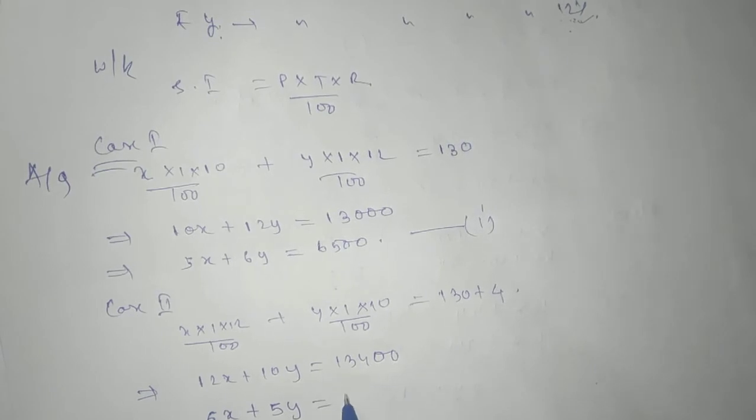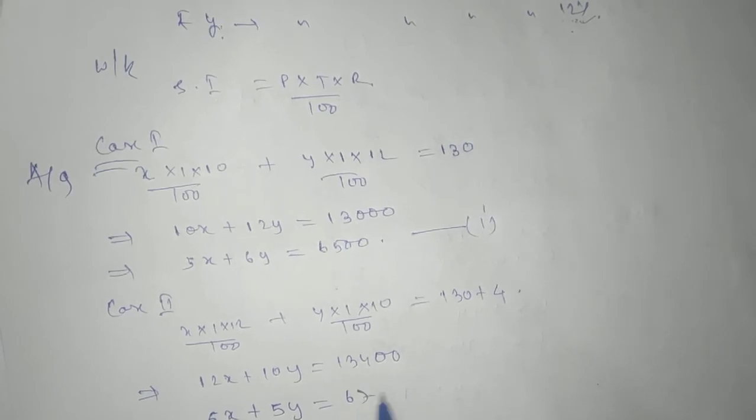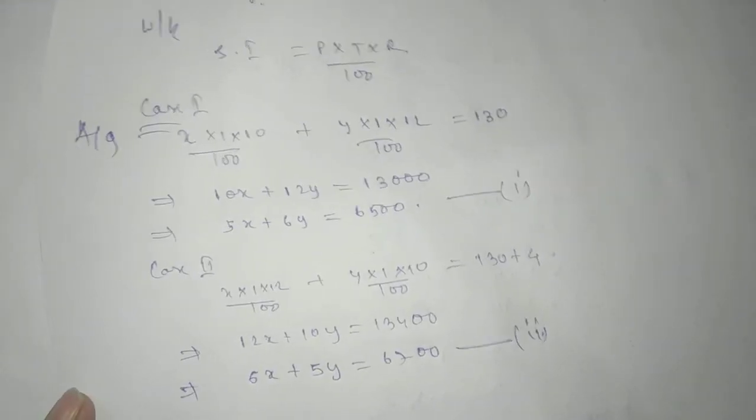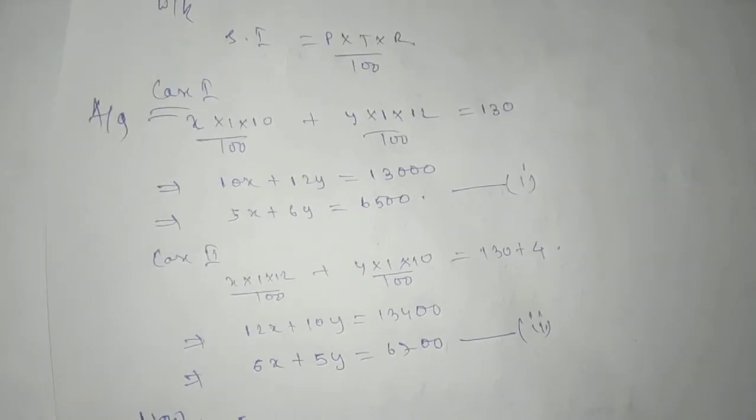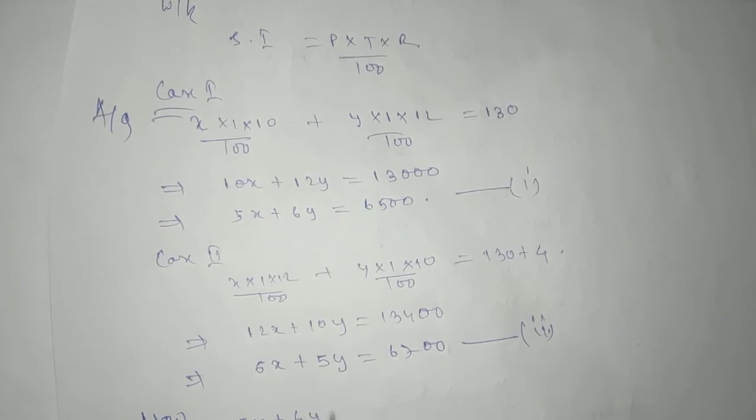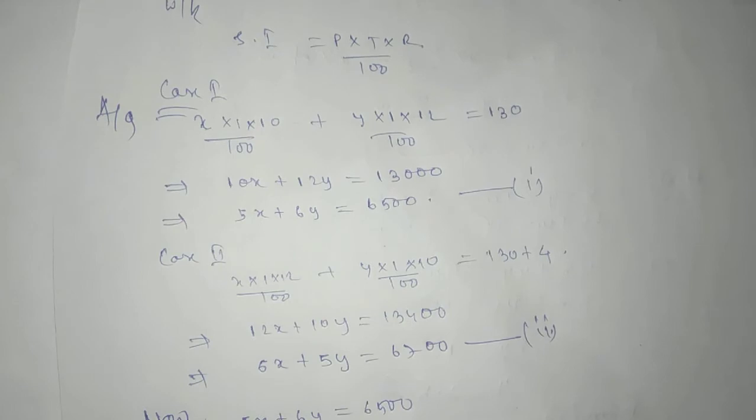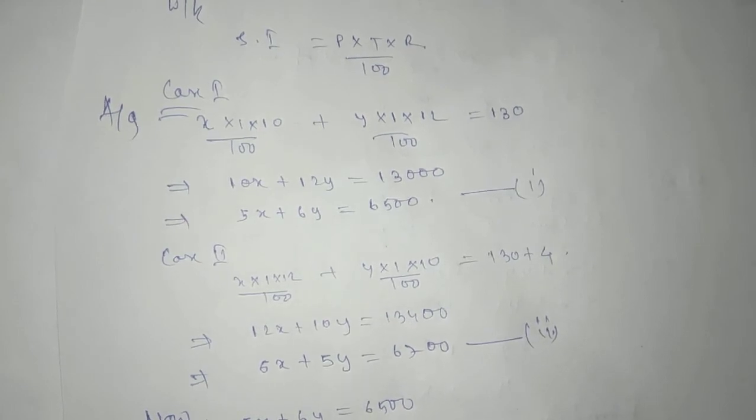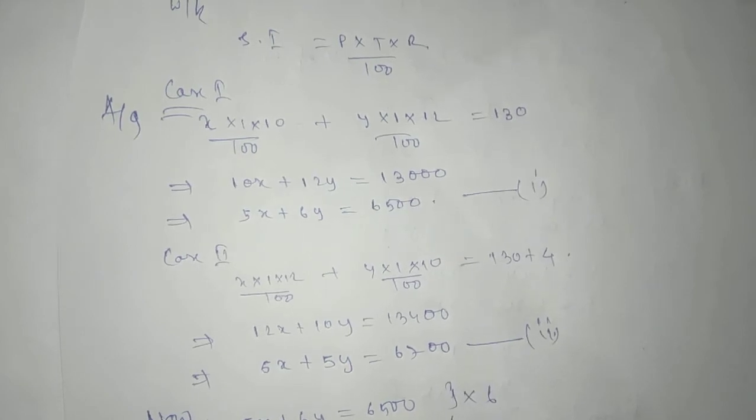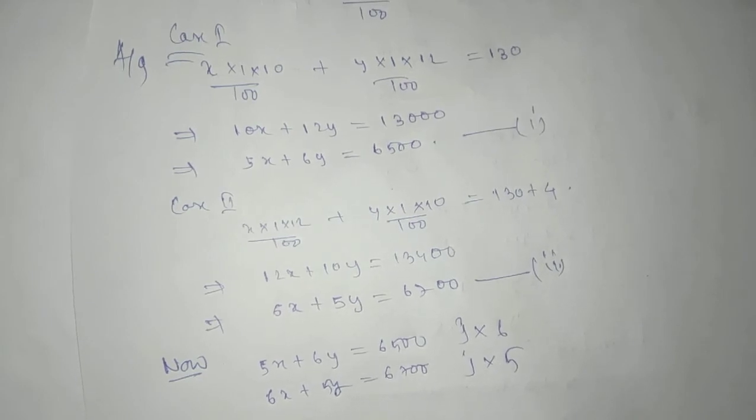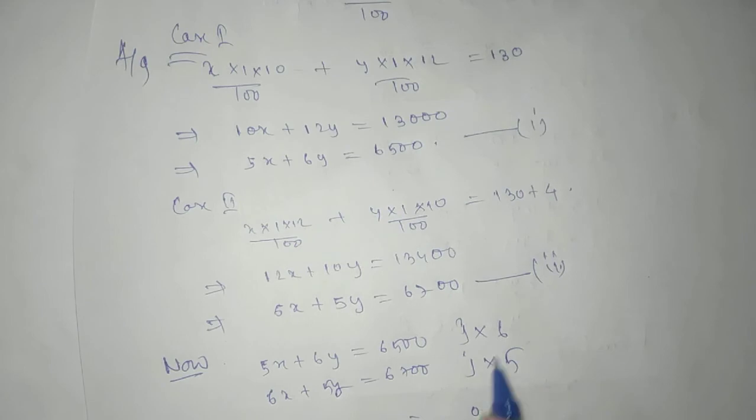Now we're going to solve these two equations. 5x + 6y = 6500 and 6x + 5y = 6700. Take 6 here, take 5 here: 30x + 36y = 39000.